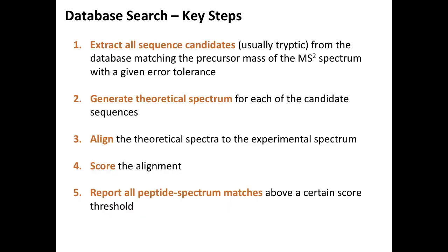Fundamentally, it's five key steps. The first step is extracting all sequence candidates — you go through your database and ask which sequences could in theory give rise to a peptide of the precursor ion mass you observed. Not all sequences will match, and this is where it's essential that we did a tryptic digest. In shotgun proteomics, we didn't create all possible sub-sequences, but only tryptic peptides. That reduces the search space drastically — we only look at tryptic peptides that have the right mass to match a particular spectrum.